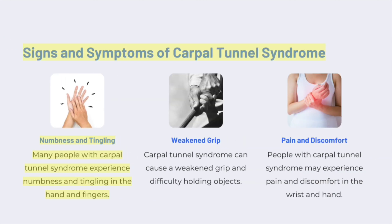Signs and Symptoms of Carpal Tunnel Syndrome. Numbness and Tingling: Many people experience numbness and tingling in the hand and fingers. Weakened Grip: Carpal Tunnel Syndrome can cause a weakened grip and difficulty holding objects. Pain and Discomfort: People may experience pain and discomfort in the wrist and hand.